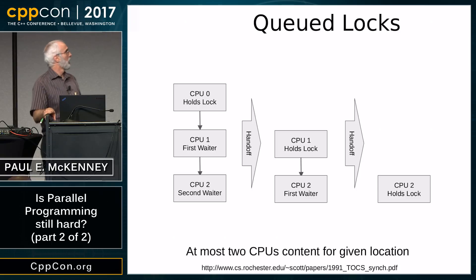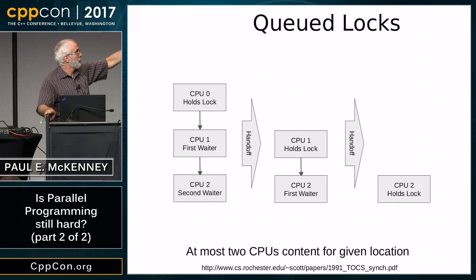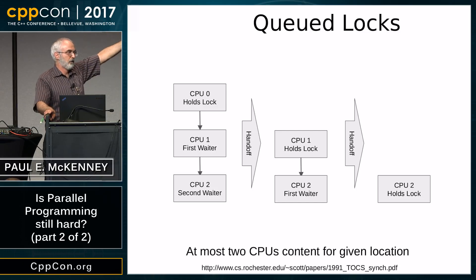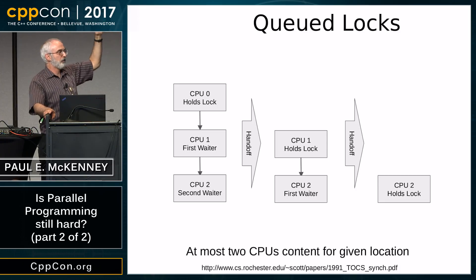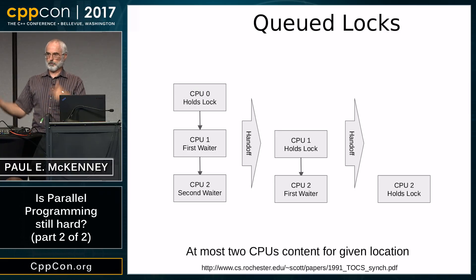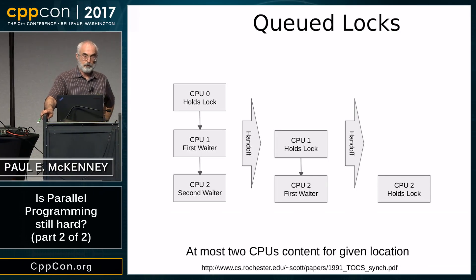One way to fix this is queued locks — make an actual queue. The fundamental paper is MCS locks. CPU0 holds the lock, CPU1 spins on its own node, CPU2 spins on its own node. When releasing, CPU0 only fights with CPU1, not all CPUs. I've had problems on systems of 4,096 CPUs — if 4,095 CPUs are all fighting with you, you're in a world of hurt. With queued locks, at most two CPUs contend for any given location, making high-contention scenarios much more manageable.